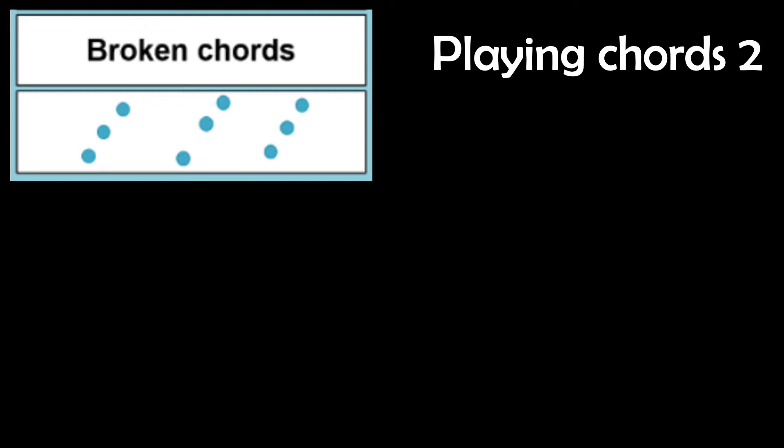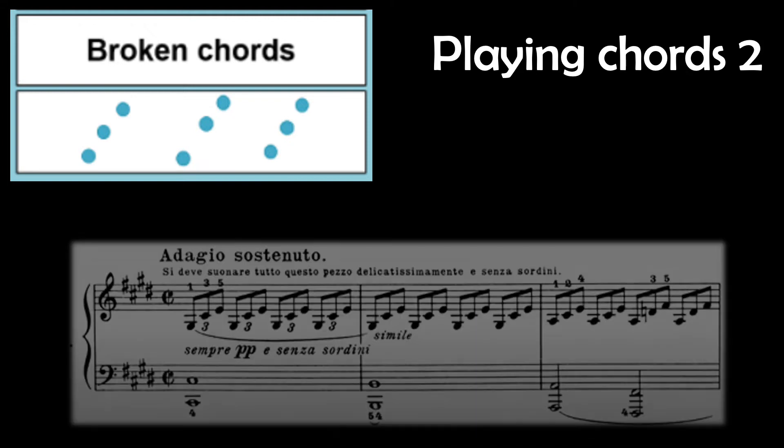Broken chords are when you play the notes of the chord individually. This example is from Beethoven's Moonlight Sonata.